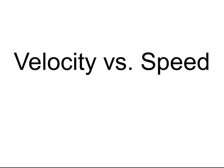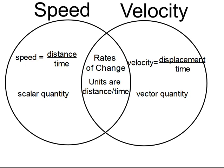However, sometimes they will be the same value when we talk about how they're different. Here's a little Venn diagram that describes speed and velocity and has some things that are different about them and some things that are the same.